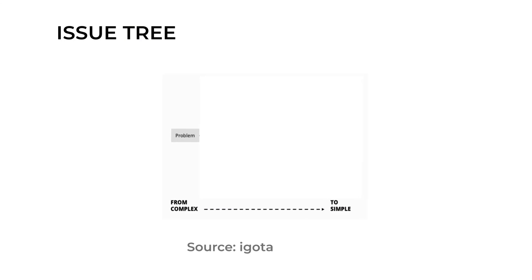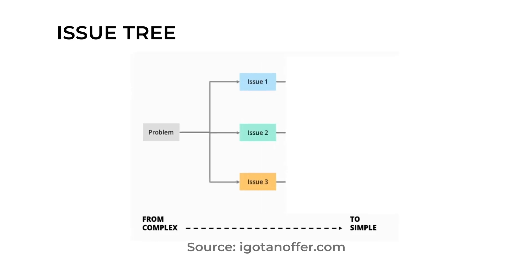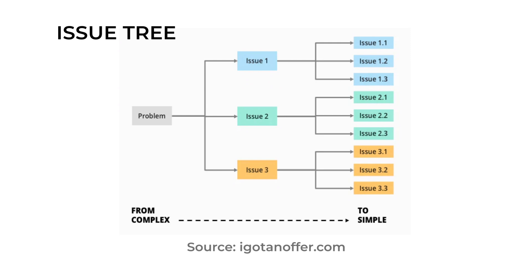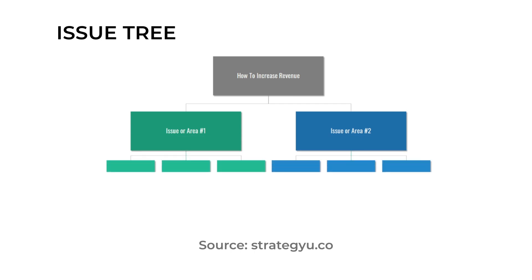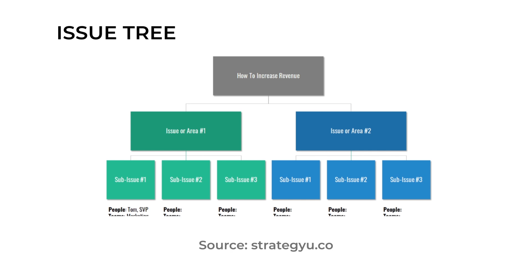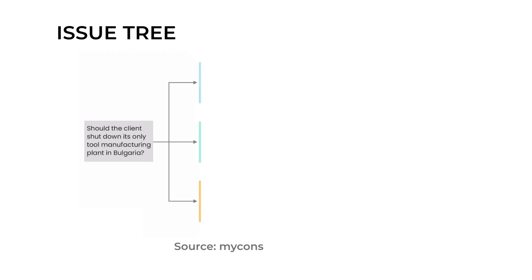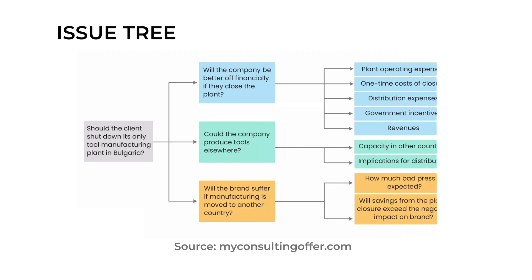One method consultants use is to create an issue tree to arrange all the information they have and divide it into all possible issues and sub-issues. An issue tree is particularly helpful for solving large and complex problems, as it facilitates splitting them up into smaller and solvable problems. Issue trees get their names from their structure — narrow at the top with the problem statement and wider towards the bottom, as each level accommodates more specific sub-issues. A common type of case in which a MECE issue tree is used is profitability cases.